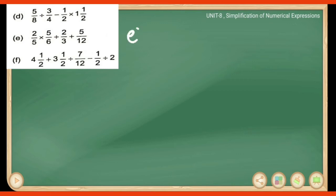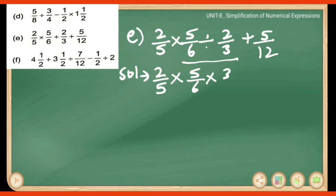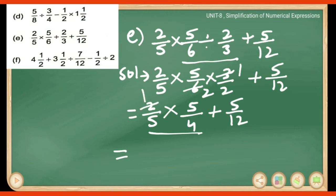Part E: 2/5 multiplied by 5/6 divided by 2/3 plus 5/12. According to DMAS rule, division is solved first: 5/6 ÷ 2/3 becomes 5/6 × 3/2, giving 5/4. So now the expression is 2/5 multiplied by 5/4 plus 5/12. In multiplication, 2×5=10 and 5×4=20, simplifying to 1/2 plus 5/12.